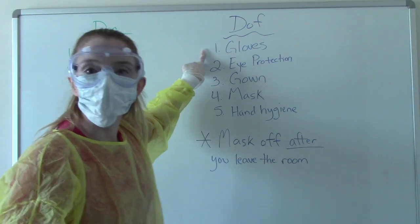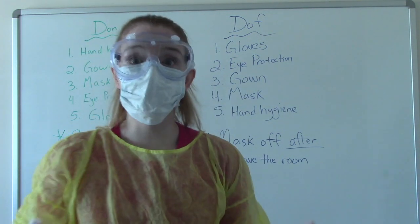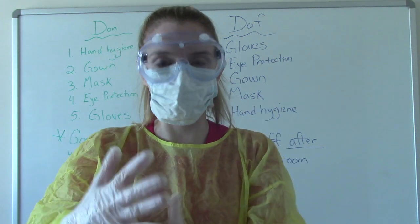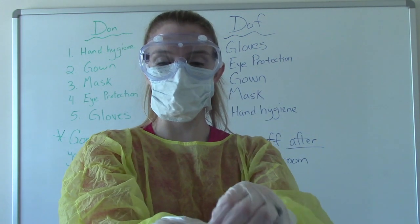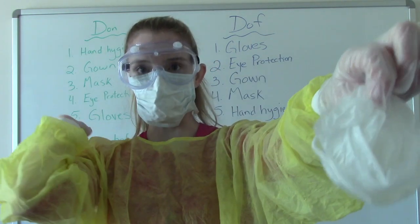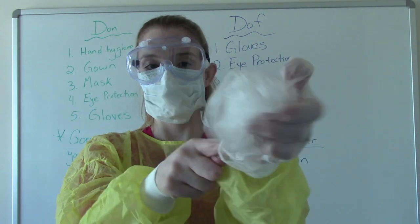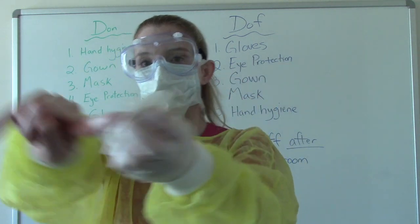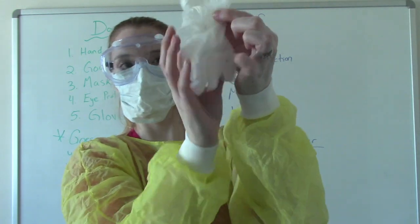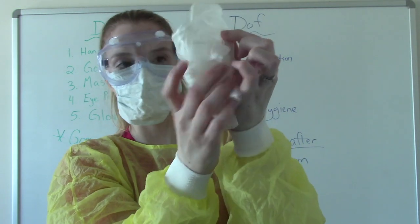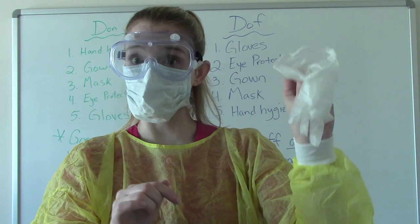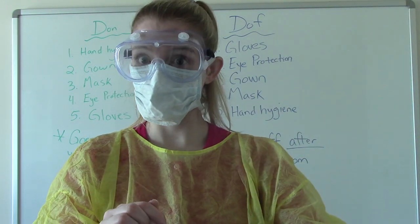The first step of doffing — taking off our PPE — is to remove our gloves, and there is a correct way to do this. You take the dirty part of your glove, pinch it, and pull it off with your other glove. Then sneak your finger under the second glove and pull it off, so the inside — which was touching your hand — stays clean. All of the outside is dirty, so now we get rid of it.